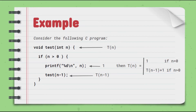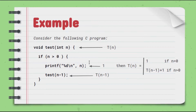If we want to trace the time taken by this function to execute given input n, we call it C(n). For the recurrence relation we use C(n) instead of f(n). The if-condition is a constant, so we can ignore it or count it as 1. The printf is one operation, so we take it as 1.